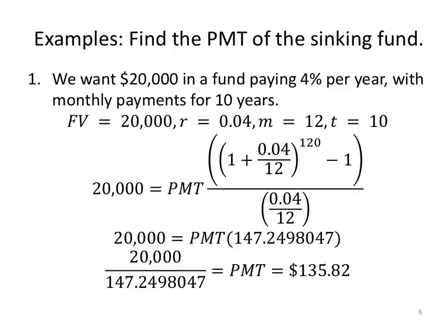We can also find the payment of the sinking fund. We want $20,000 in a fund paying 4% per year with monthly payments for 10 years. We want, so in the future, $20,000. My interest rate is 4%, monthly happens 12 times a year, t is 10 years. So now, instead of knowing the payment, I know the future value. So I put the $20,000 on the left-hand side of the equal sign. Leave PMT because that's what I'm looking for.